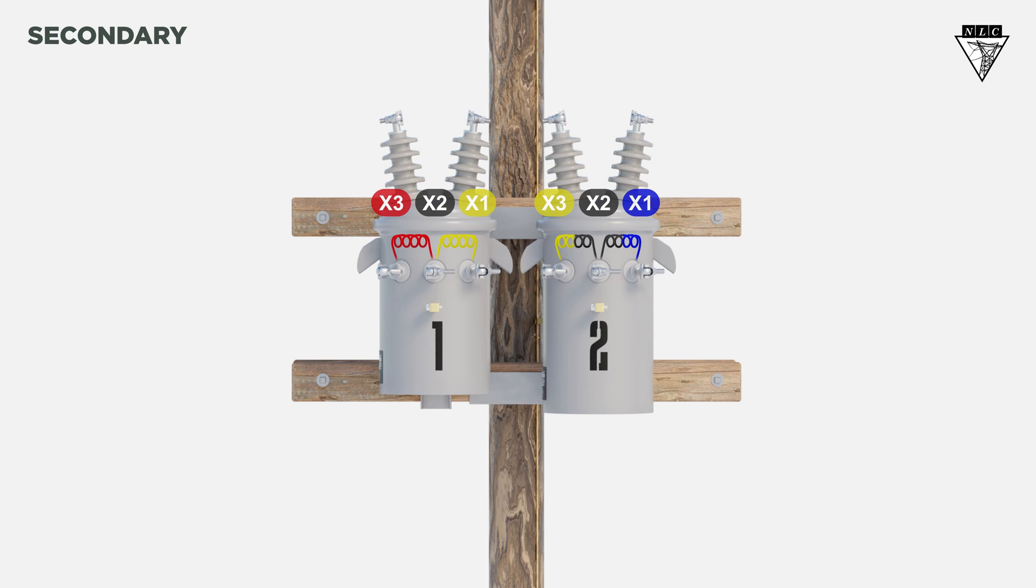To complete the secondary side, first, bond all transformer cases together and tie them to ground. Use the lighter transformer's X2 bushing as the neutral.